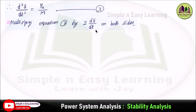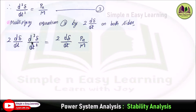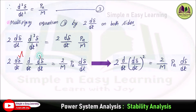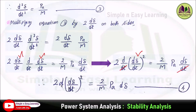Considering this third equation, multiply both sides by 2 · dδ/dt. You get 2 · (dδ/dt) · (d²δ/dt²) = 2 · (dδ/dt) · (Pa / M). The term d²δ/dt² becomes d/dt of (dδ/dt), so multiplying yields d/dt · (dδ/dt)² = (2/M) · Pa · dδ/dt. Cancelling dt on both sides gives d(dδ/dt)² = (2/M) · Pa · dδ — this is the fourth equation, where d represents differentiation.